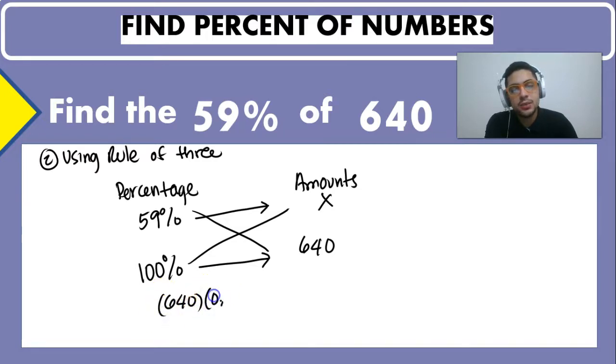So this would be 640 multiplied by 59% which is the same as 0.59 and that is equal to a hundred percent which is 1 multiplied by X.